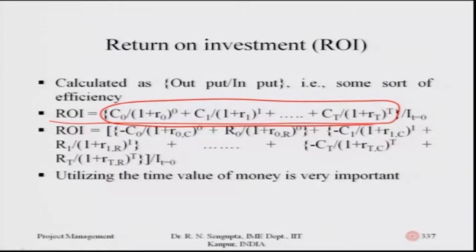All investments take place at different points of time: t0, t1 up to t-capital-T, and the investment outflows at those points are C0 through C-sub-T. I find out the time value and the overall investment happening at I-zero, which is the investment at time t=0. If there are any independent payments happening at other times, I can find out their time value and add them up for the denominator.